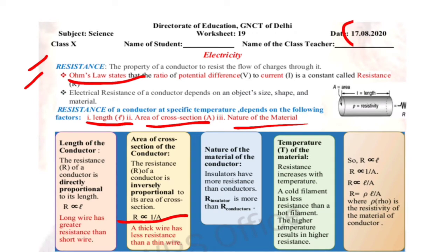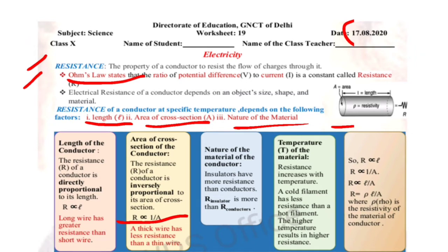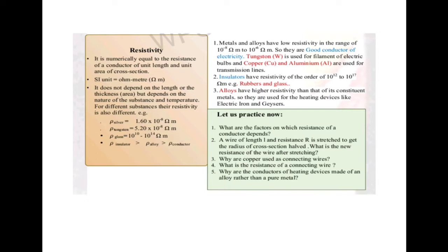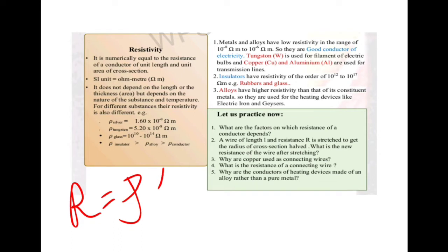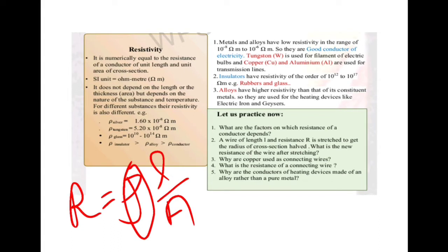Here you have a figure showing a wire with area A, length L, and resistivity rho. Resistance and resistivity are two different parameters — do not combine them. The resistance symbol in a circuit is drawn as a zigzag wire. Resistivity is numerically equal to the resistance of a conductor of unit length and unit area of cross section.